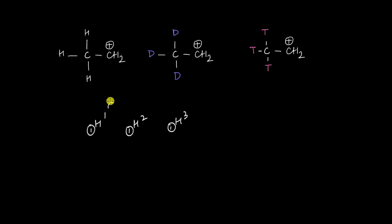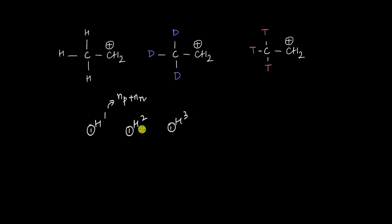However, if you look at their mass numbers — which is the number of protons plus number of neutrons — their mass numbers are different. Hydrogen only has one proton and no neutrons, so it has a mass number of 1. H2 has one proton and one extra neutron giving it a mass number of 2, while H3 has one proton and two neutrons giving it a mass number of 3. So these two isotopes have extra neutrons in the nucleus and are definitely heavier compared to the hydrogen atom.